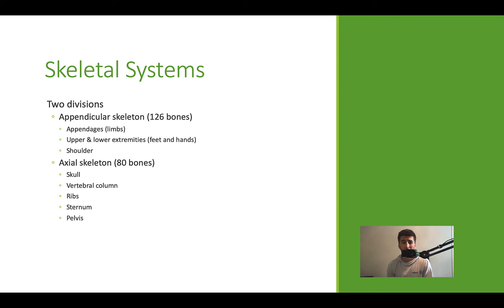Appendicular and axial should tell you approximately what they are. Our appendages are the things not in our thorax or head. The appendicular skeleton covers everything that is the appendages — limbs, arms and legs, hands and feet, and the shoulder as well. Altogether there are about 126 bones. There are some really small bones inside the hands and feet, and some really big bones like the femur, tibia, and fibula.